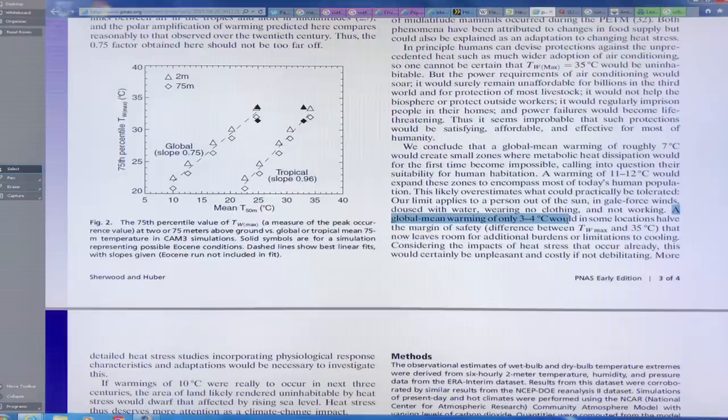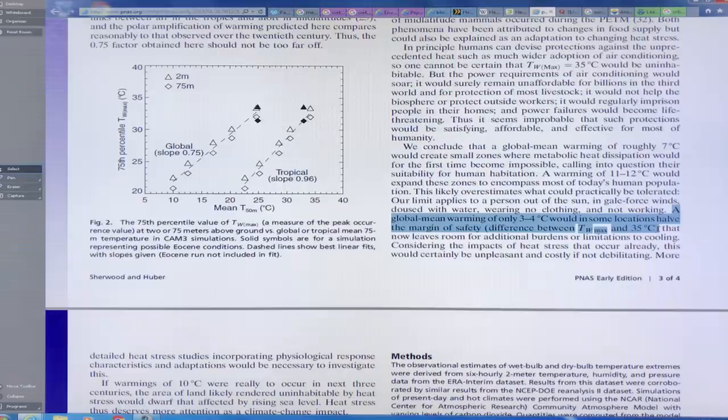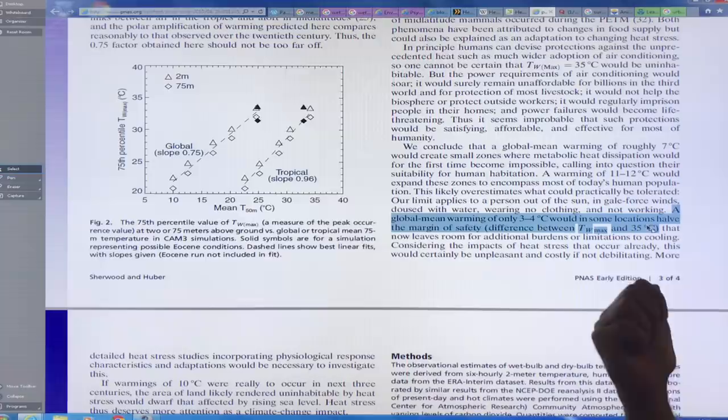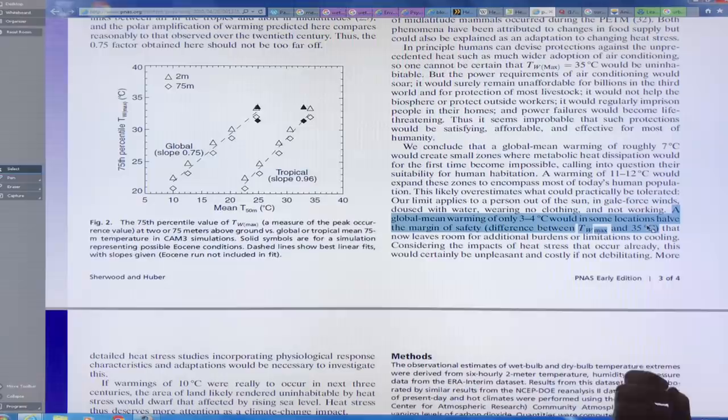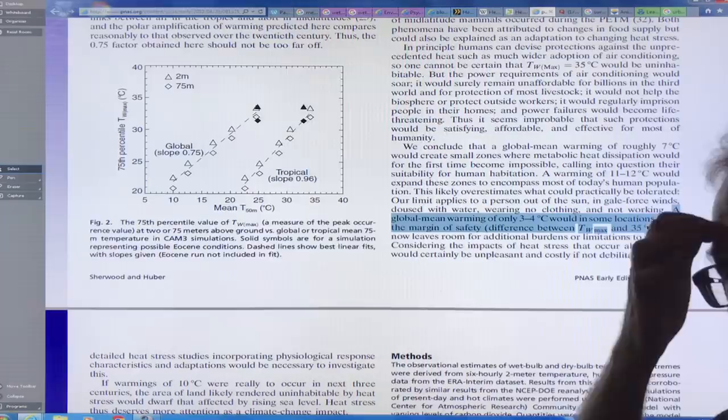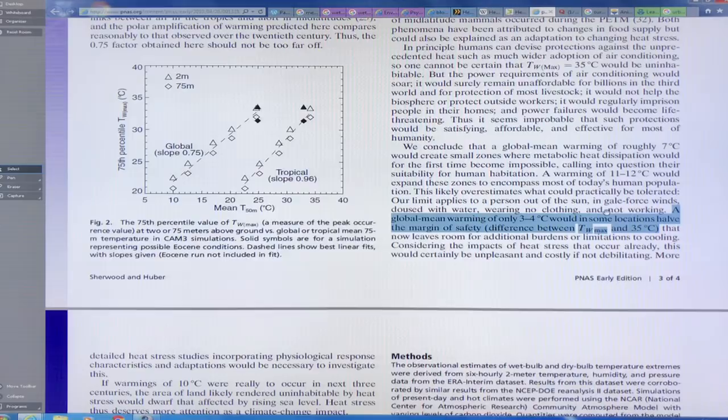Because heat moves from hot areas to cold areas, and when the environment is the same temperature as your body, there's no way that heat can be dissipated from your body. It's as simple as that. It is basically a physical limit. Even a warming of three to four would have the margin of safety, which is the difference between the wet bulb temperature and 35. And that 35, there's some question as to how accurate it is. It's for a perfectly healthy person.